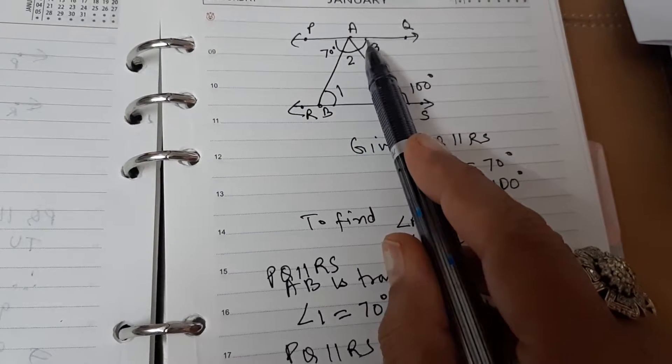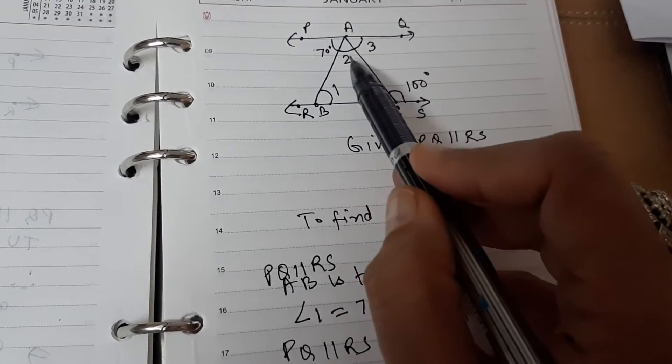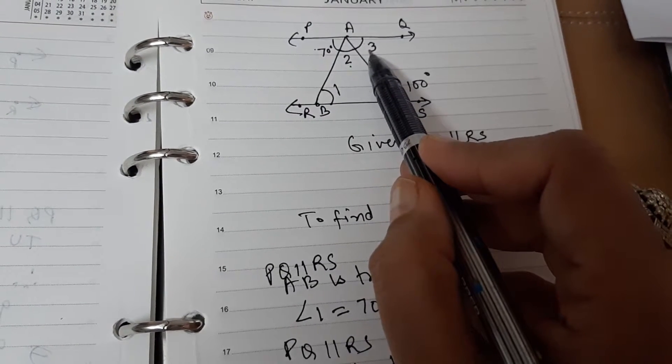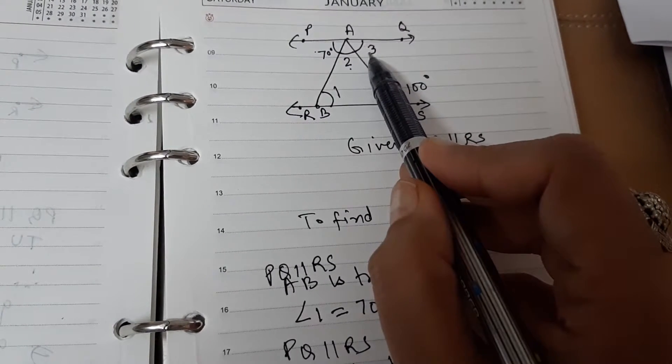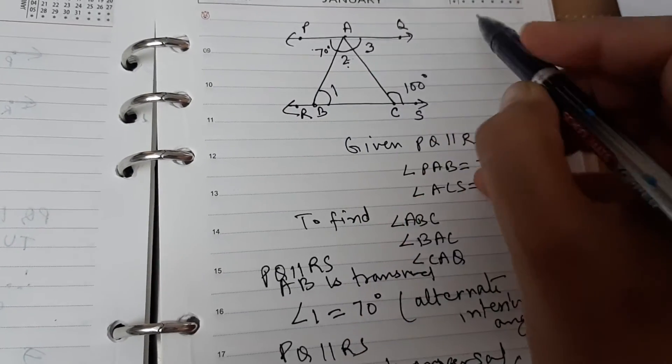Yes, you are right. We will be using 70 degrees plus angle 2 plus angle 3 will be equal to 180 degrees. These are angles on the straight line.